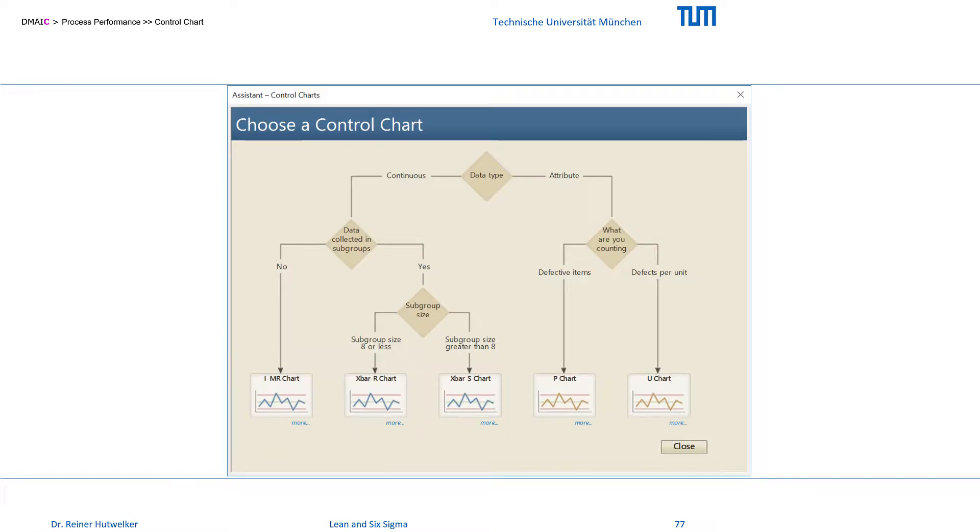For our sample size from the first week after the improvement, with n smaller or equal 100, I recommend the IMR control chart, which can resolve all single values graphically.